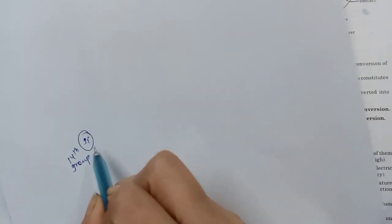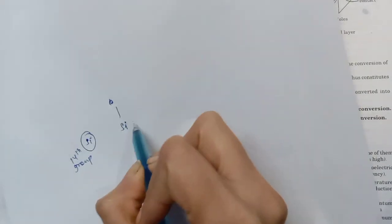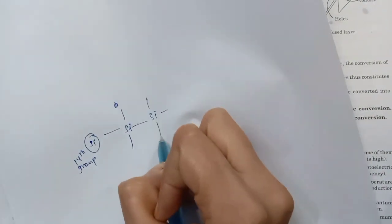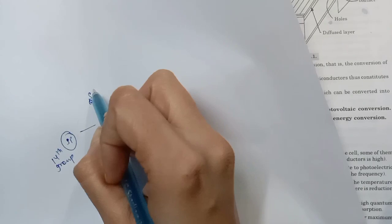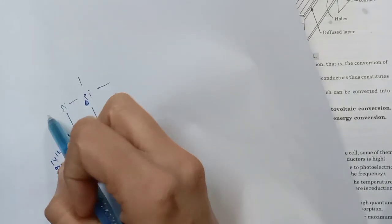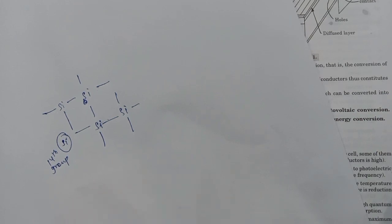Silicon is a 14th group, which is a 4th group element, meaning it has 4 valence electrons. It has 4 electrons for covalent bonding. Silicon is connected to other silicon atoms — 4 silicon atoms bonded together to complete the outermost shell through electron sharing. Because of this, silicon is not normally conductive.